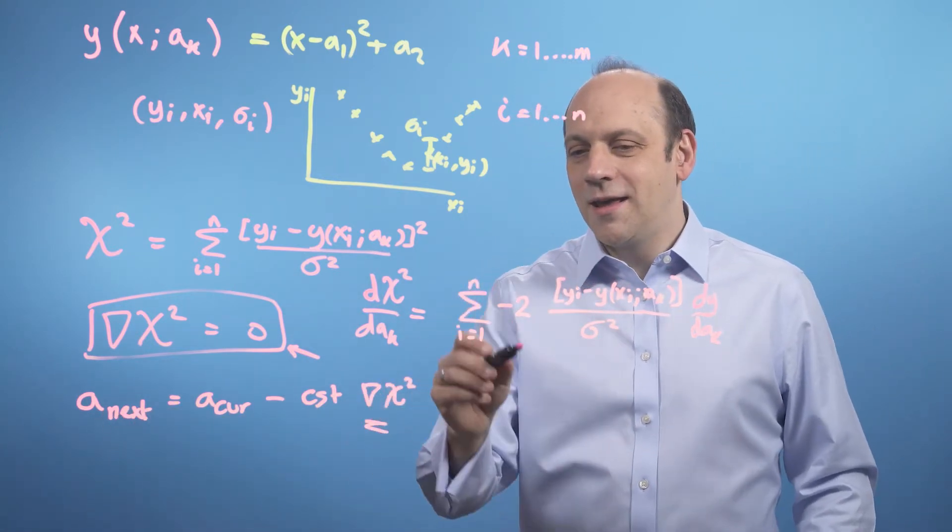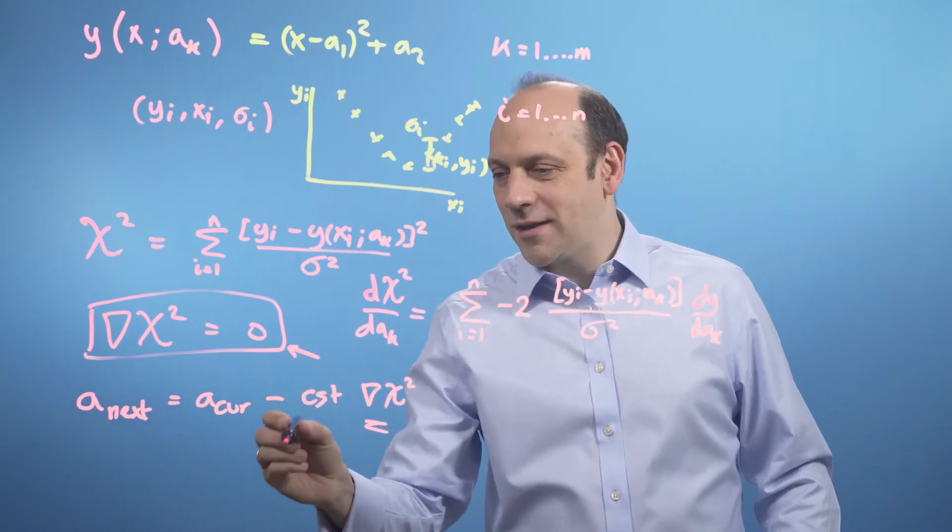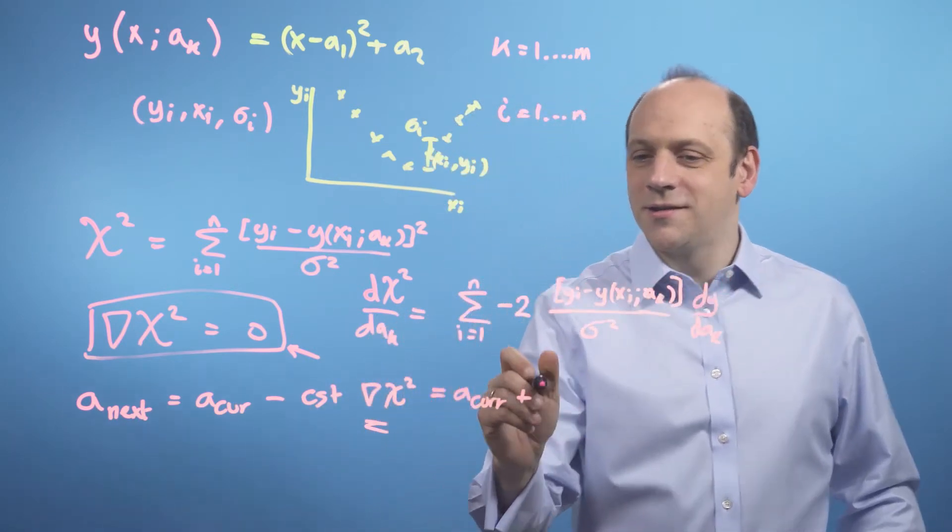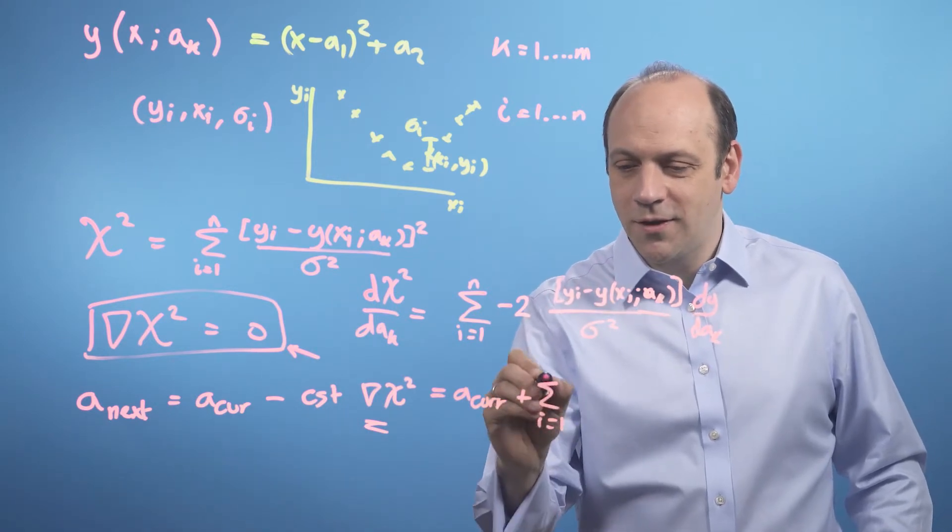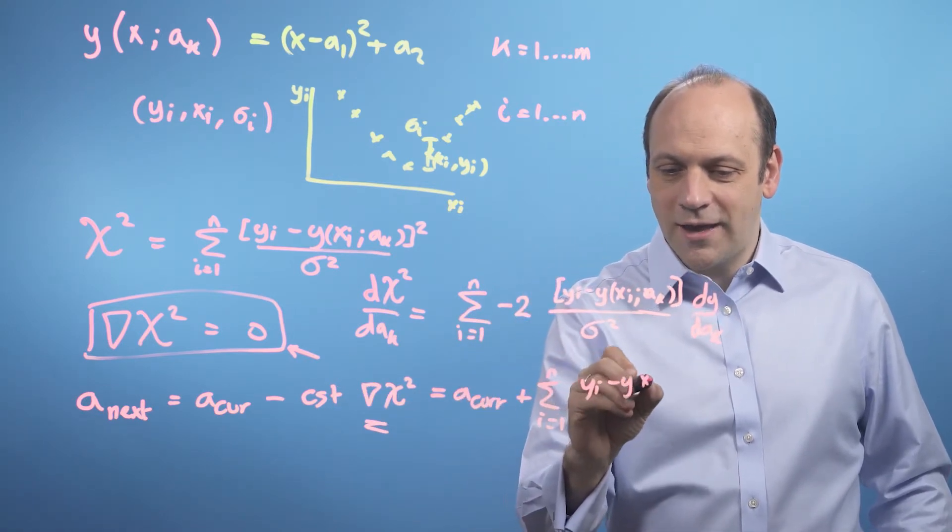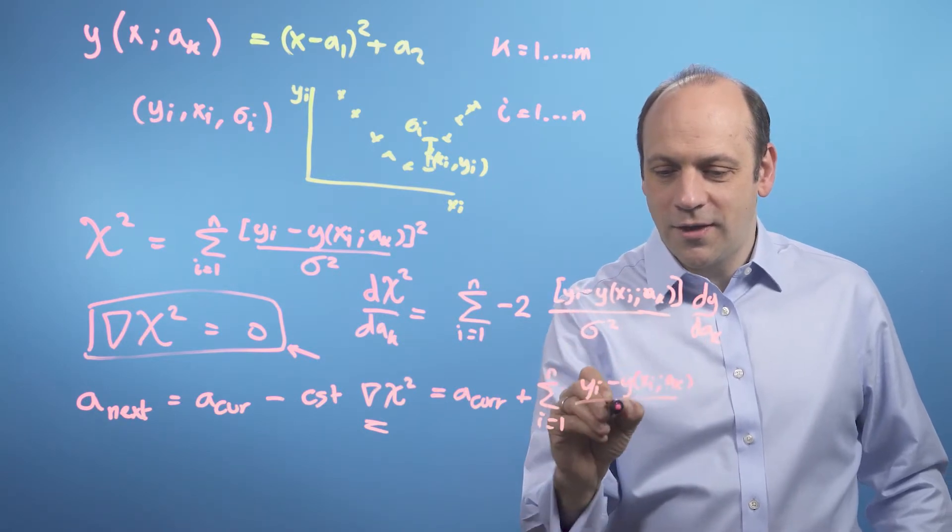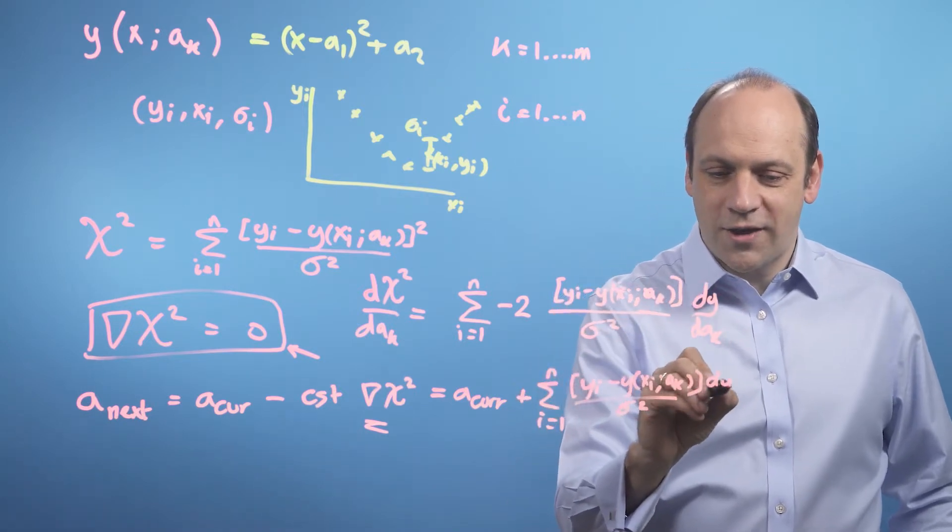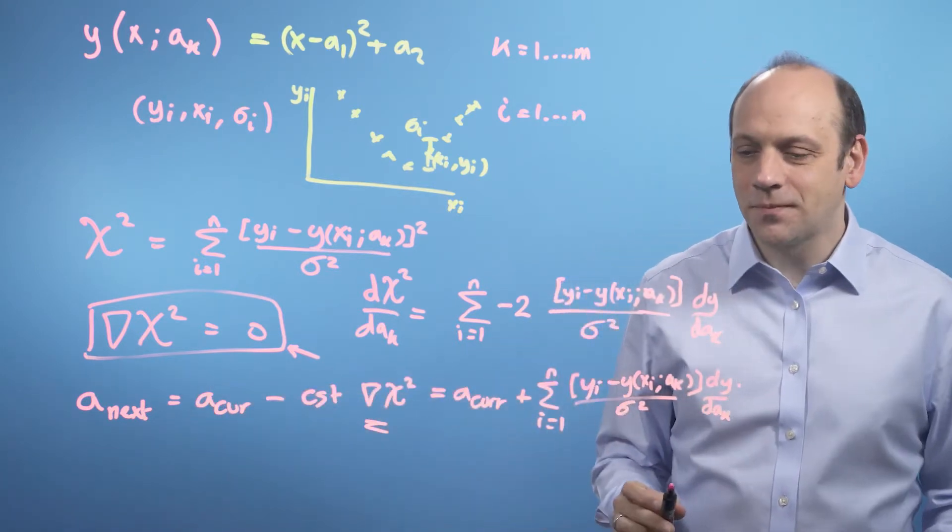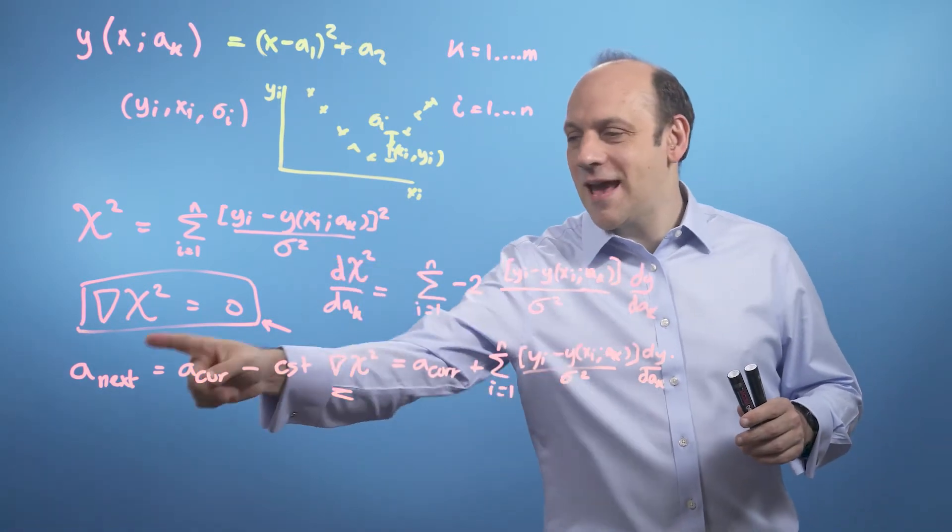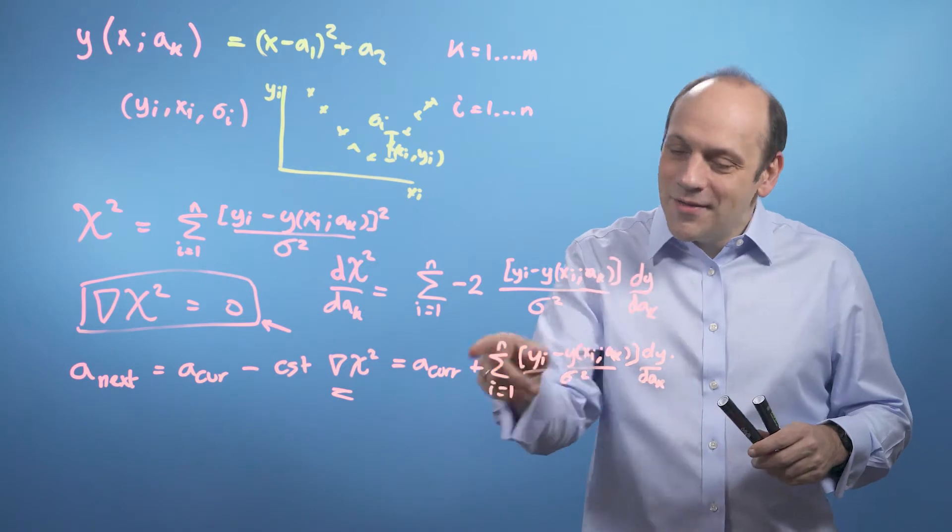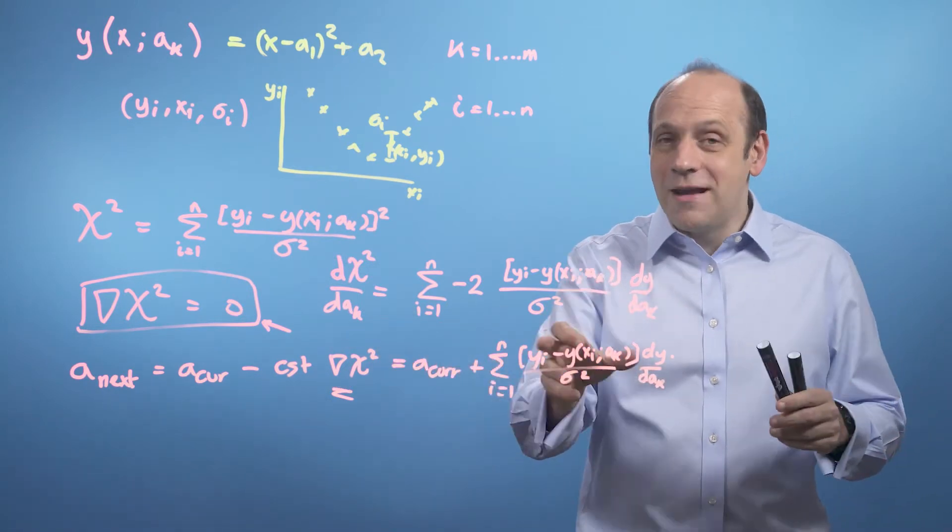The minus two I can just take out. So when I come to update here, if I wrap the minus two into the constant, I can just make that a plus. So I'm then going to get a current plus this thing, the sum from i equals 1 to n. So the minus signs will go. I'll wrap the two into the constant, then I'll just get yi minus y of xi and the a_k's divided by sigma squared times the differential evaluated at a current, because I don't know a next yet. So the steepest descent formula here is just going to be that a next is equal to a current plus this sum. And I've got to be able to differentiate y with respect to a_k. And this is one of these formulae that look really intimidating, but really isn't when you actually try to use it.